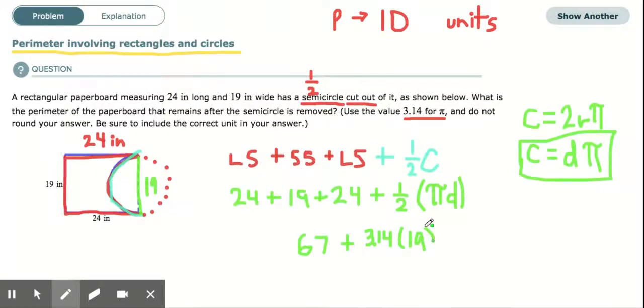So that's 67 plus half of πd. Remember, we said pi is 3.14. And d, in this case, is 19. Now I want half of that, so I'm just going to take this whole thing and divide it by 2 once I multiply it. So it'll be 67 plus, and then I'm going to do this all at once with my calculator. So 3.14 times 19, which is 59.66. But then I need to divide it by 2 because it's a semicircle. So this is 29.83.